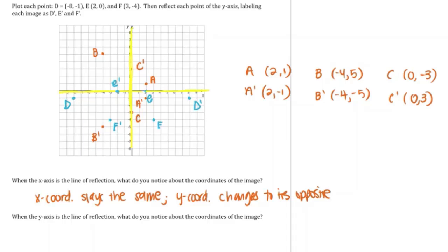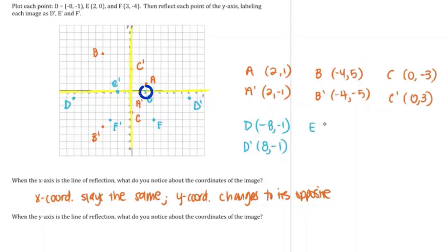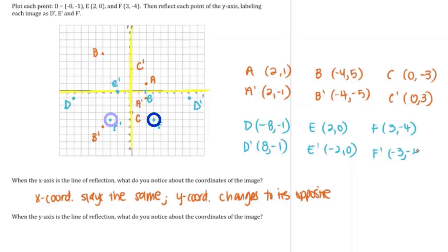Now let's look at what happened when we reflected over the y-axis. D was (−8, −1) and D prime was (8, −1). E was (2, 0) and E prime was (−2, 0). F was (3, −4) and F prime was (−3, −4). So when we reflect over the y-axis, the x-coordinate changes to its opposite and the y-coordinate stays the same. This is true every time you reflect over the y-axis.